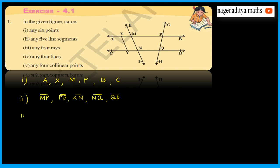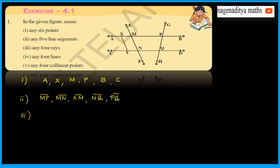The third question: name any four rays. The rays are: MP, NQ, MN, and MX.